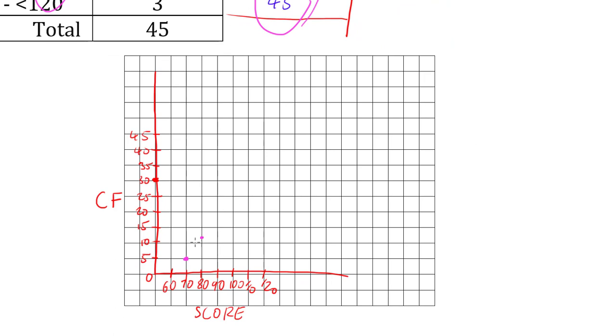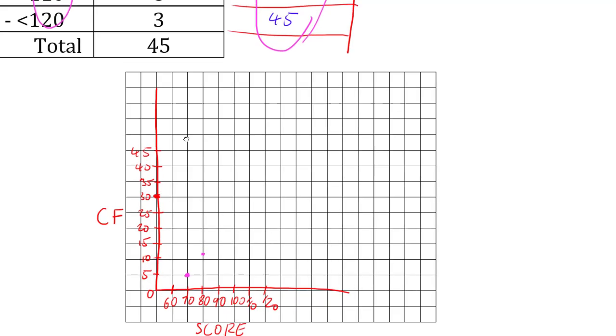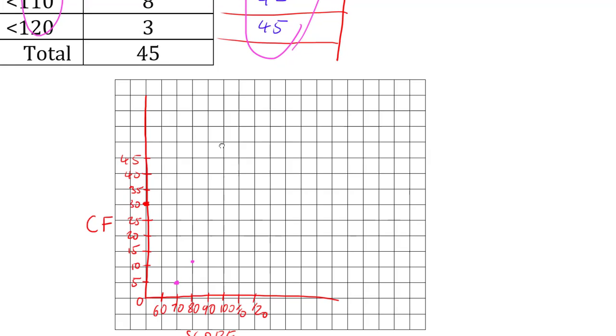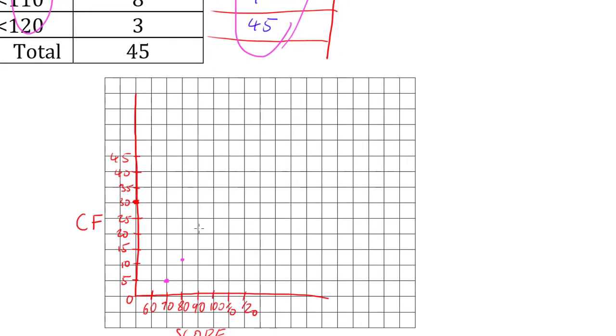And we do not join these dots together, we just do dots, we join them up at the end. 90 goes to 22.